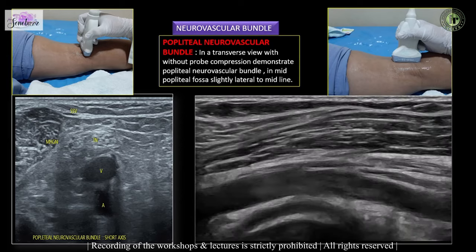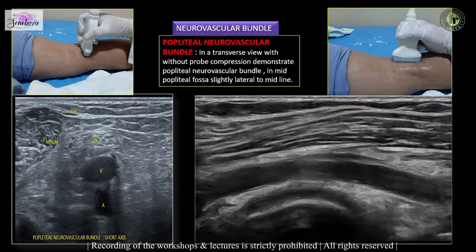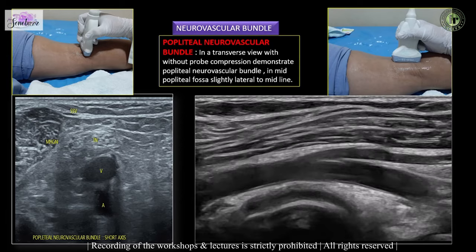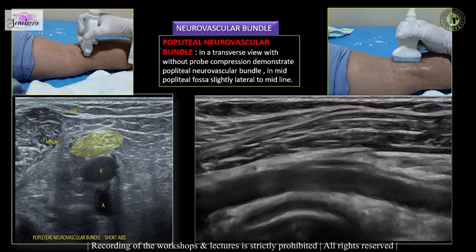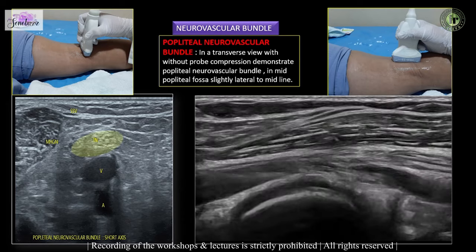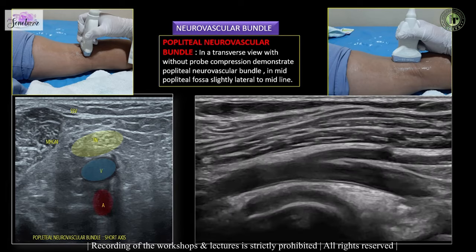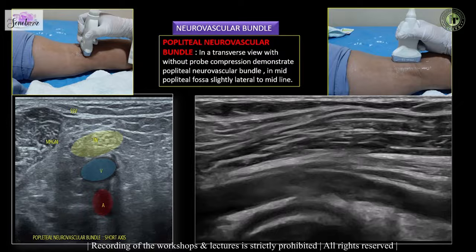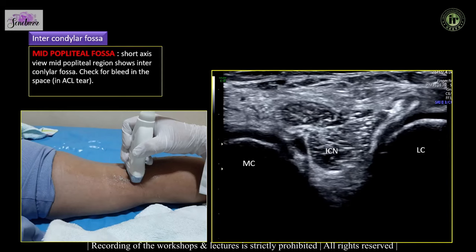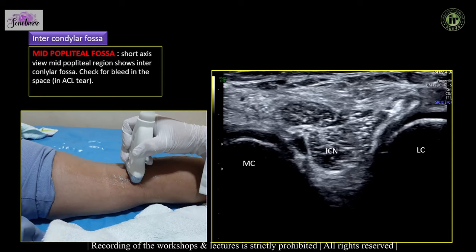The popliteal neurovascular bundle can be better demonstrated in short axis view on the posterolateral aspect of the knee, where we can demonstrate the posterior tibial nerve, popliteal vein, and popliteal artery from superficial to deep. The short axis view in the mid-popliteal region shows the intercondylar fossa, and in case of an ACL tear there may be bleeding or hematoma that we should look for.